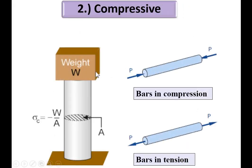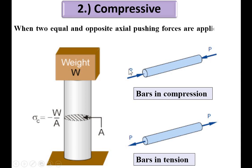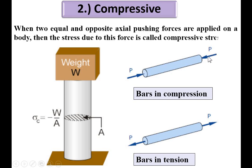Now, the second type: compressive stress. That is almost equal to tensile stress, but the direction of the load is push instead of pull. When two equal and opposite axial pushing forces are applied on a body, the stress due to this force is called compressive stress. For example, if you apply a weight on top of a bar, it is subjected to a compressive force and compressive stresses are produced.